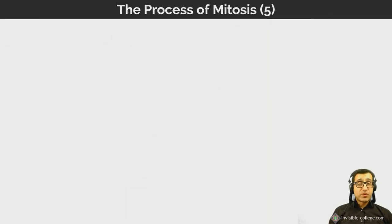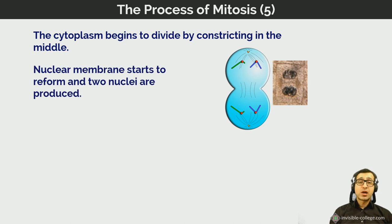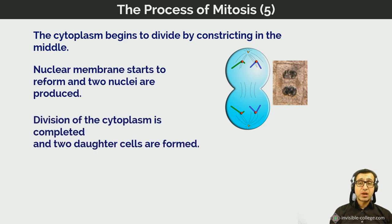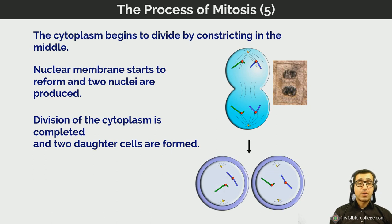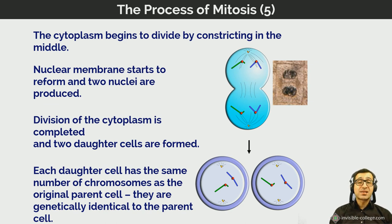After mitosis — the nuclear division — the cytoplasm of the cell begins to divide by constricting in the middle. The nuclear membrane reforms and two daughter nuclei are produced. The division of the cytoplasm is completed and two daughter cells are formed. Each of those two daughter cells has the same number of chromosomes as the original parent cell, and they are genetically identical to each other.